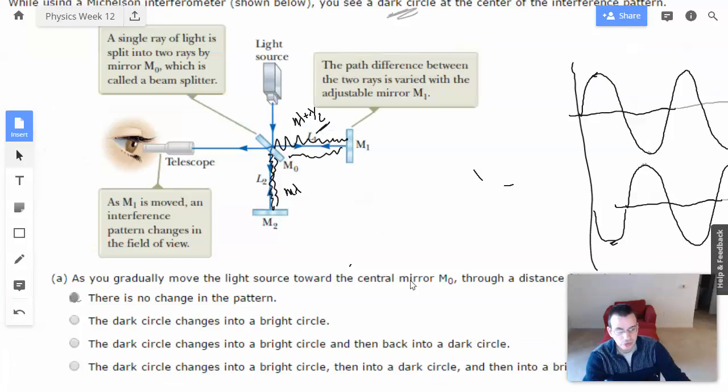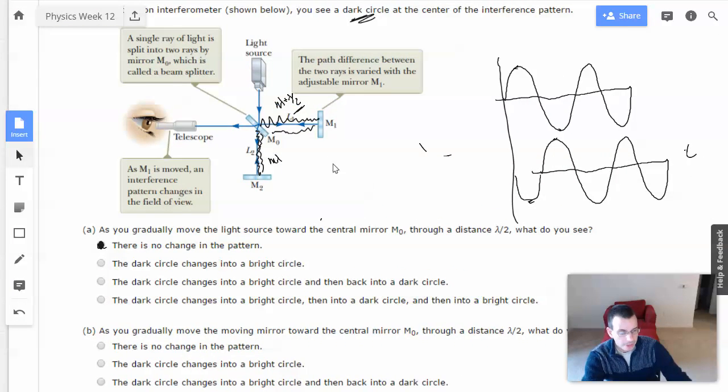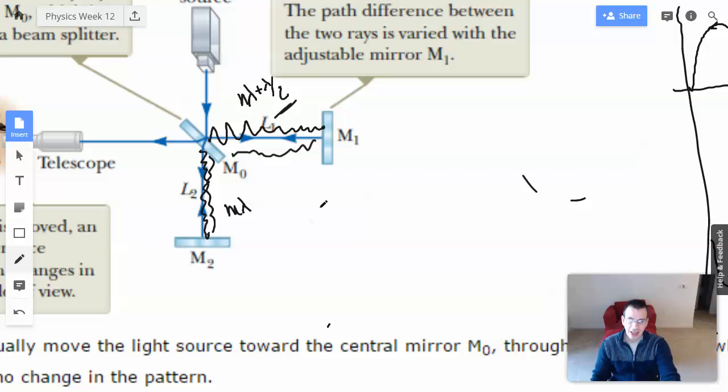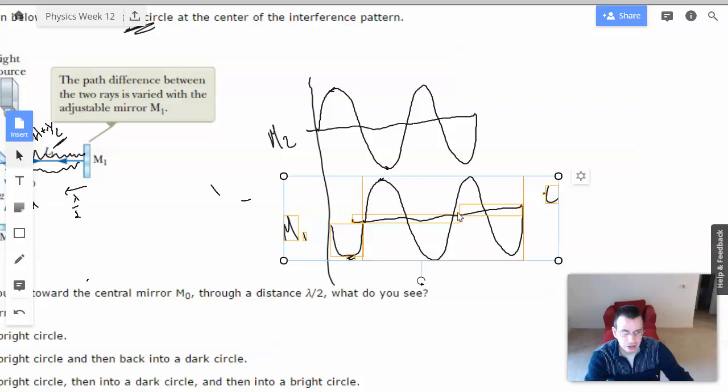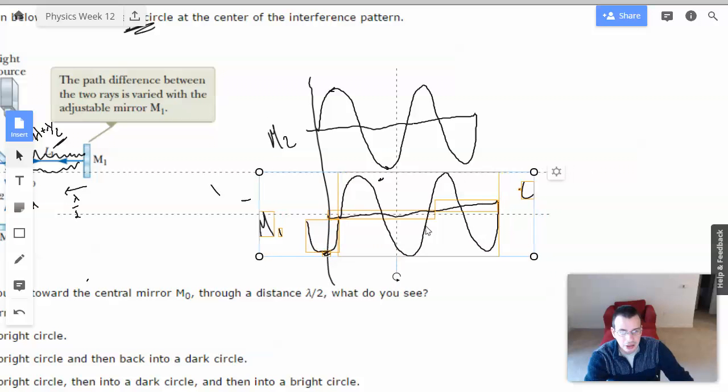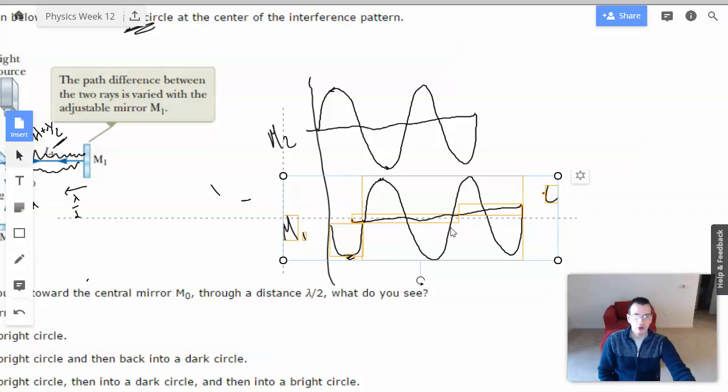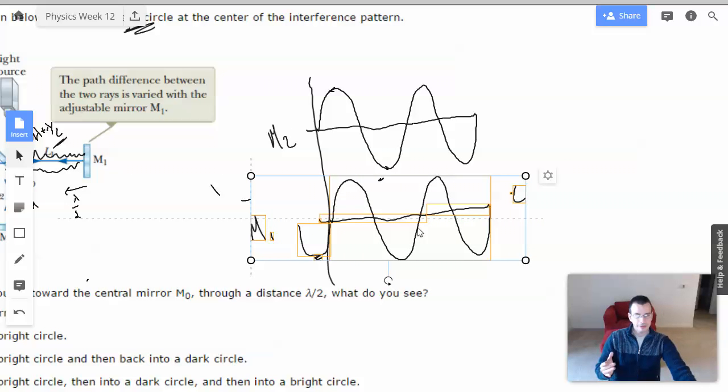So when they say they move the movable mirror by one half wavelength this direction, what you're actually going to do is you're going to move the entire wavelength. I'm going to call this guy M1, this guy M2. What you're doing is you're moving this wavelength right here. So you're going to move it one half wavelength there. It's one half, because you're moving the mirror one half wavelength, so the total travel of the wave is going to be one full wavelength less.